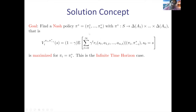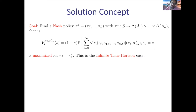Each agent i targets maximizing his utility given that the remaining agents use fixed policies π₋ᵢ. You fix n−1 agents and the remaining agent plays optimally — this should be true for all possible choices of n−1 agents. This is the Nash policy: a generalization of Nash equilibrium for stochastic games.